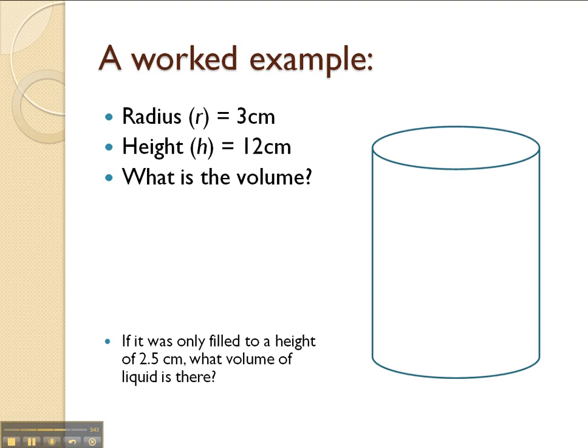Here's another worked example. In this case, the cylinder has a radius of 3 centimetres and a height of 12 centimetres. What is its volume? The first thing that we would be looking for is the area of the circle at the top is going to be equal to pi times 3 squared, which is going to be equal to pi times 9.